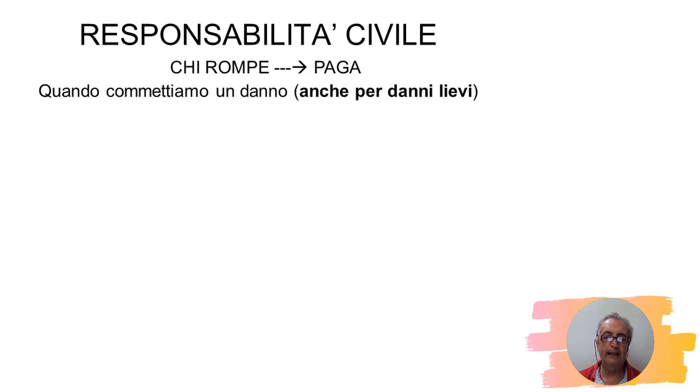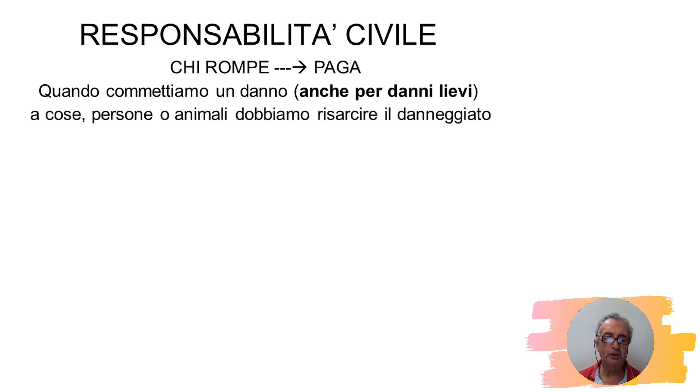Riguardo alla responsabilità civile, il classico detto 'chi rompe paga' ci fa comprendere immediatamente il significato: chi causa un danno deve pagare il danno provocato. Questo vale anche per i danni lievi, non solo per quelli di poche decine di euro, ma anche per quelli di migliaia di euro. Questo principio vale per cose, persone e animali durante la circolazione del veicolo.